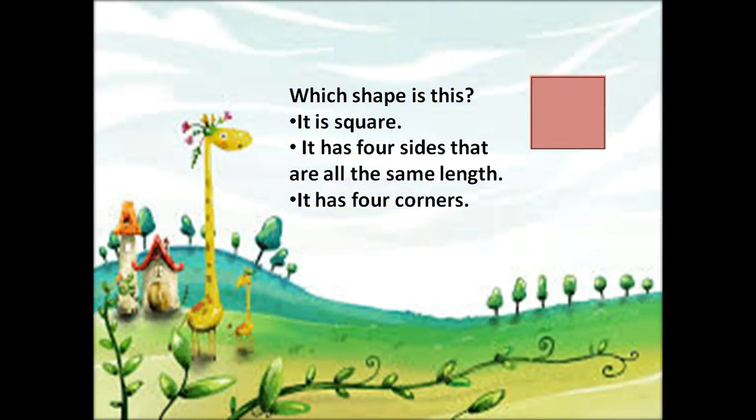Now, you can see which shape is this? Yes, it is a square. It has four sides that are all the same length and it has four corners. A square ki charo sides equal hote hai aur iske four corners hote hai.